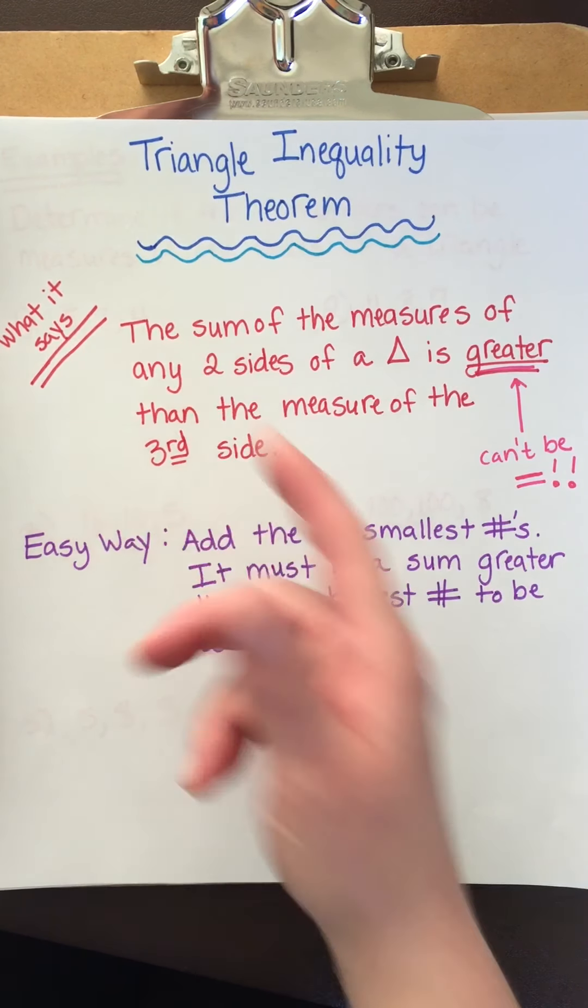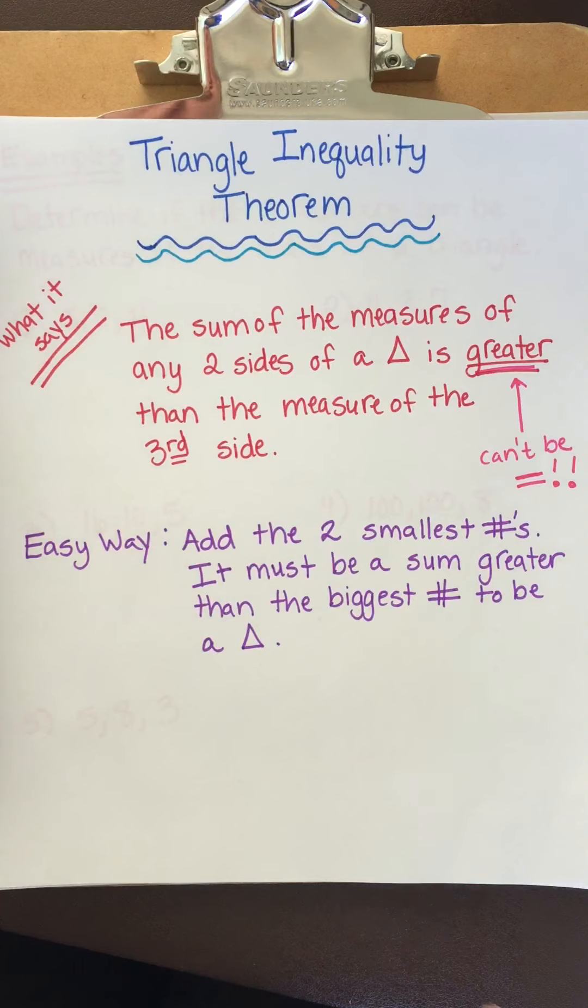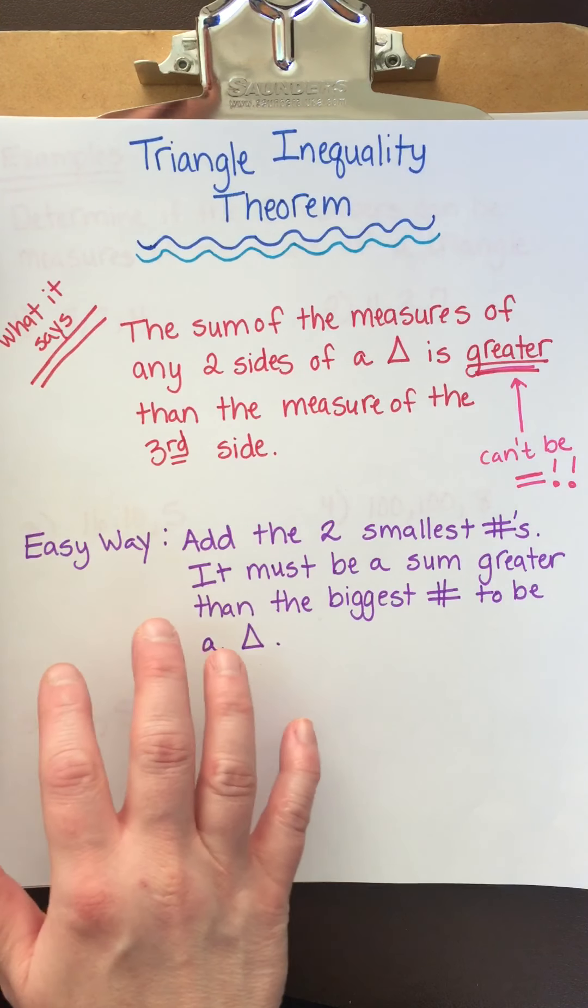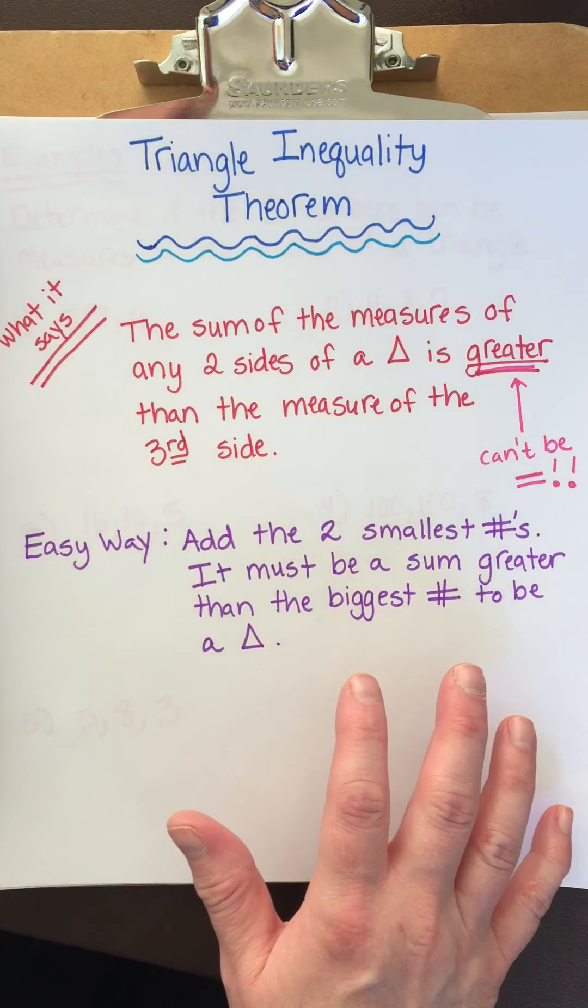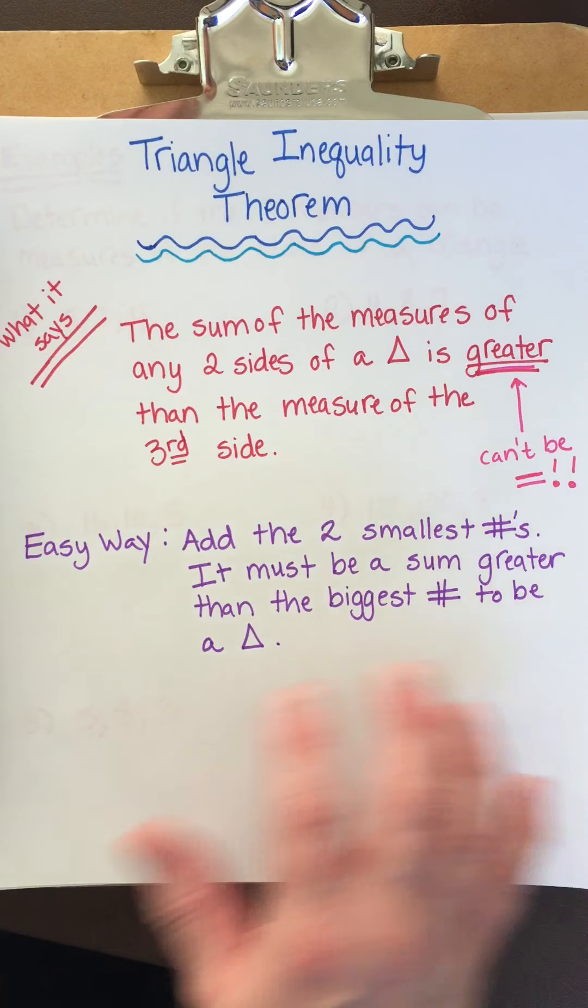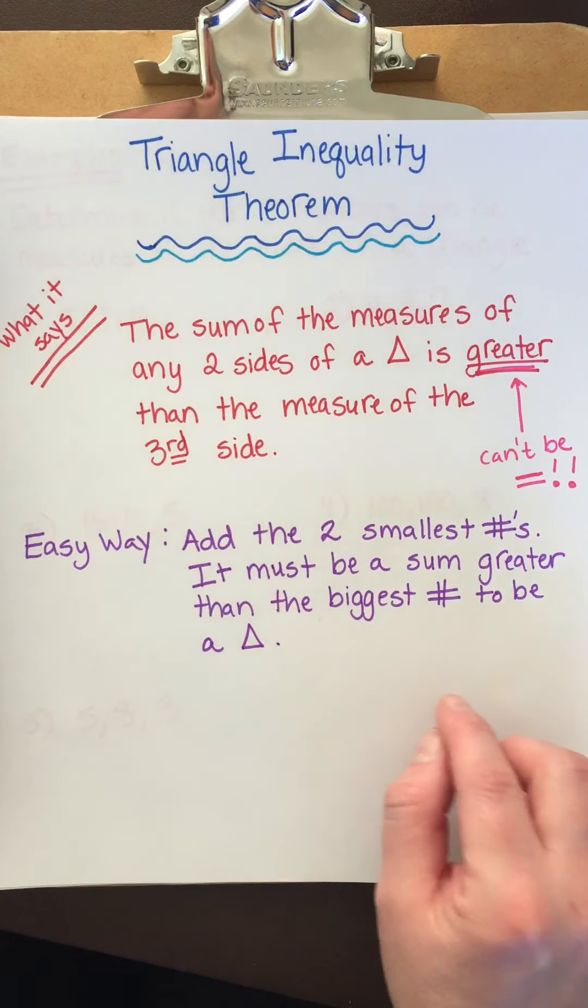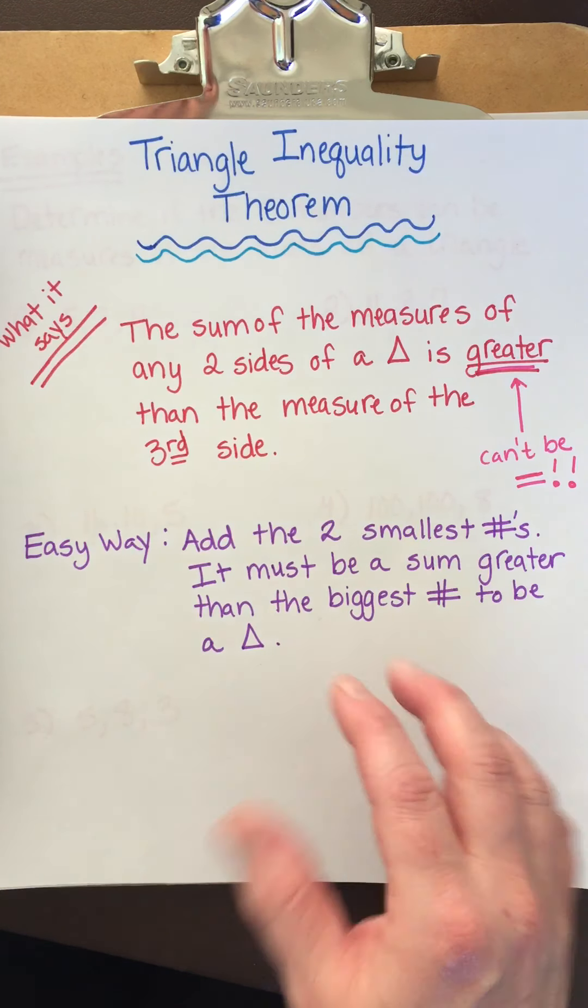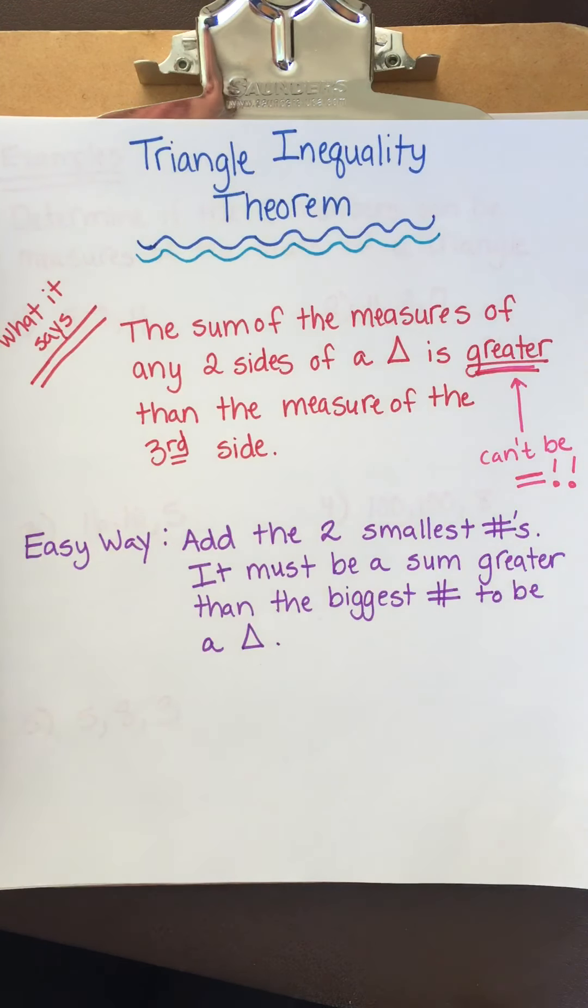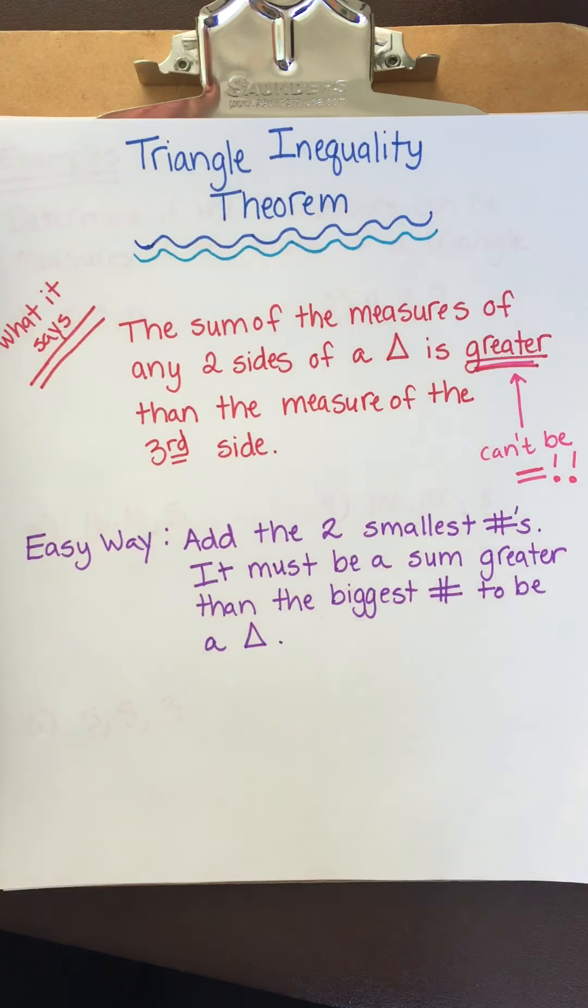And remember, sum means when you add them up, right? So the easy way to do this is just add the two smallest numbers and whatever you get has to be a number greater than the biggest number. If it's not greater than the biggest number, then it can't possibly make a triangle. So let's look at some examples.